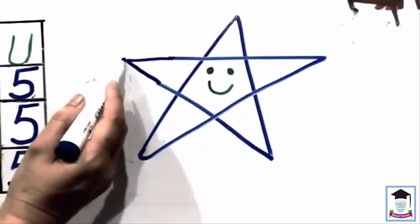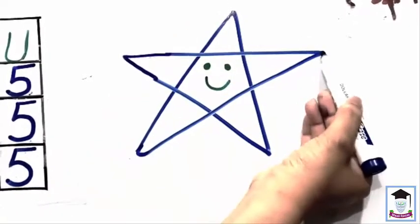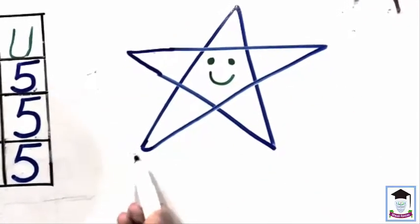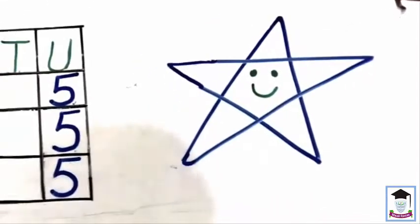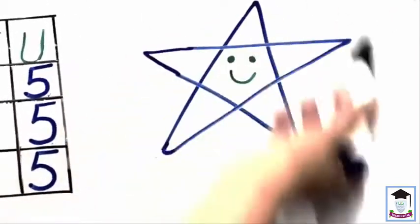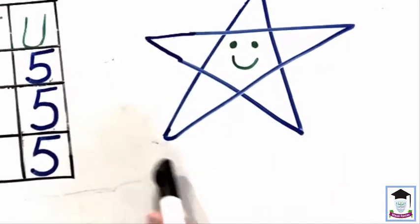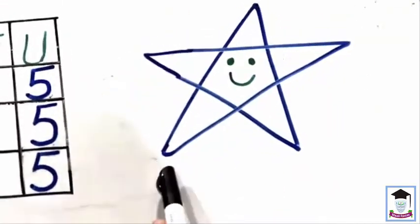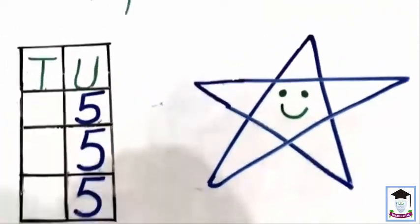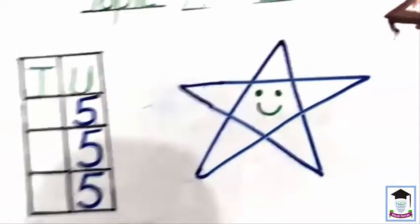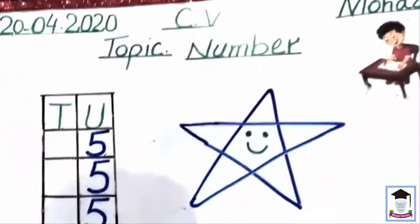We will count: number one, number two, number three, number four, and number five. So it has five corners. Now we know it has five corners. Okay students, practice this number five in your neat copies. Thank you, I love you.